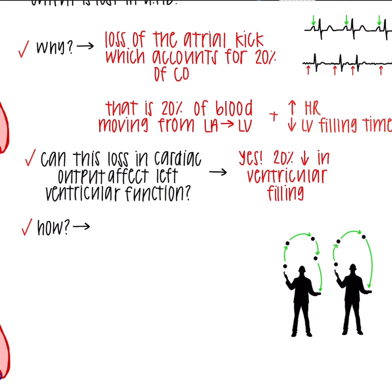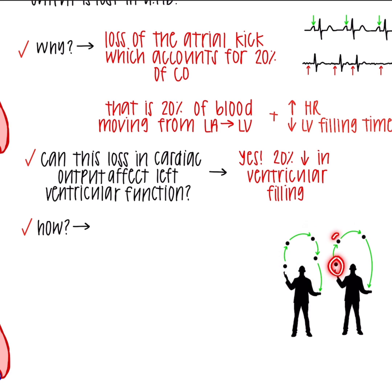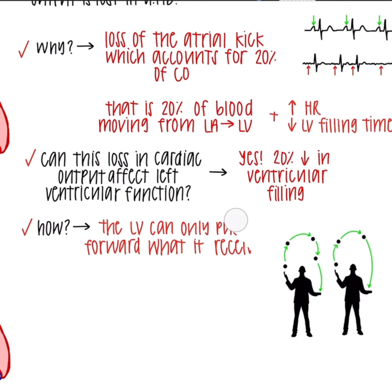One way to showcase this is to look at this juggler. If I give him four balls to toss, he's going to have four balls to move around. But if I only give him three and take one away, he's only going to have three to move. The left ventricle can really only move forward the blood that it receives from the left atrium — so if you take volume away, it's going to lose volume of what it's supposed to provide to the body.